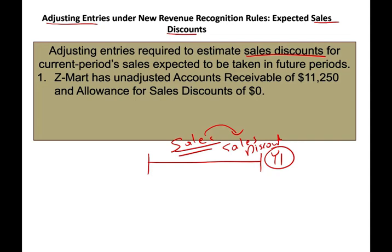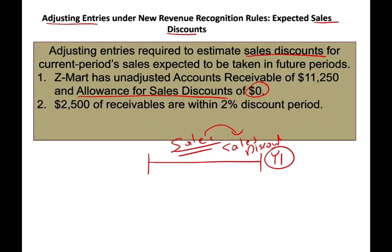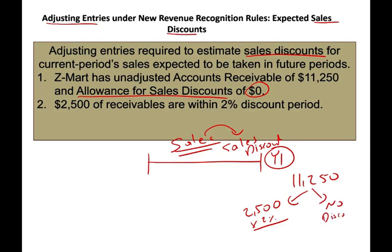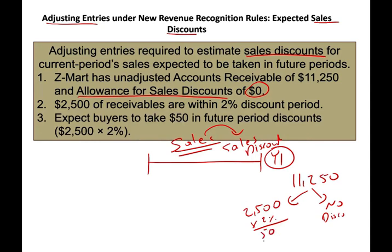Let's assume that Zmart has an unadjusted accounts receivable of $11,250 and an allowance for sales discount of zero — they don't have any prior estimate. Now, $2,500 of the receivable are within the 2% discount period. So they have $11,250 in total receivable, of which $2,500 — if the customer pays early — they're going to get 2% off. The remainder has no discount. If we take $2,500 times 2%, we get $50.